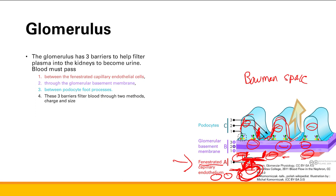Just to reiterate, what are the three different barriers? We have to go through the fenestrated capillary endothelium, through the glomerular basement membrane, and through the podocytes. These three barriers work both by charge and by size.